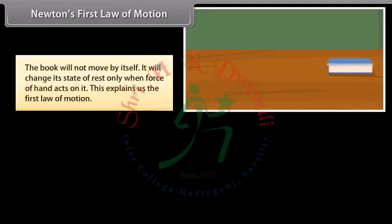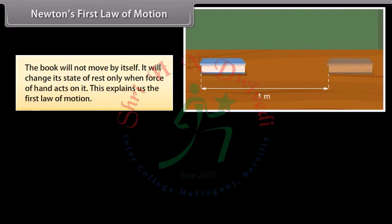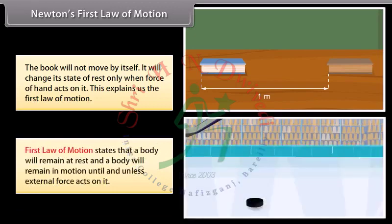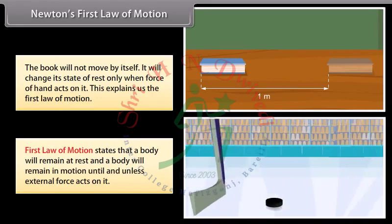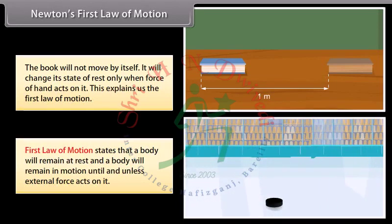The book will not move by itself. It will change its state of rest only when force of hand acts on it. This explains the first law of motion. First law of motion states that a body will remain at rest and a body will remain in motion until and unless external force acts on it.